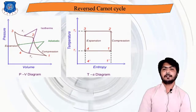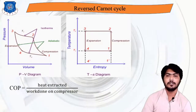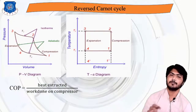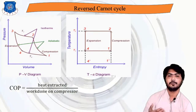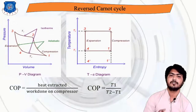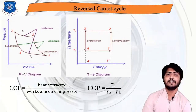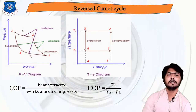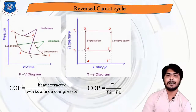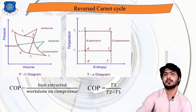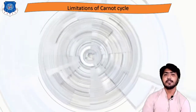The COP of the reverse Carnot cycle is the heat extracted divided by the work done on the compressor. The final formula is: COP = T1 / (T2 − T1), where T1 equals the lower temperature and T2 equals the higher temperature. This is the main COP formula for the reverse Carnot cycle.